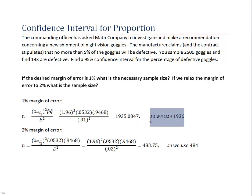So to summarize, in order to have a 95% confidence interval with no more than a 1% margin of error, we would need to sample 1936 goggles. That's quite a few. Well, what if we reduce that margin of error to 2%?